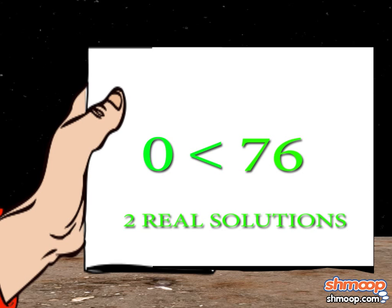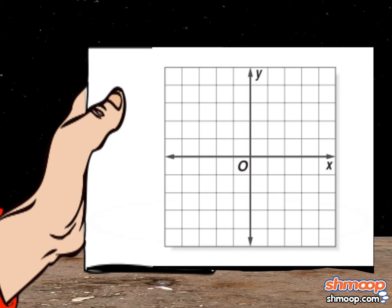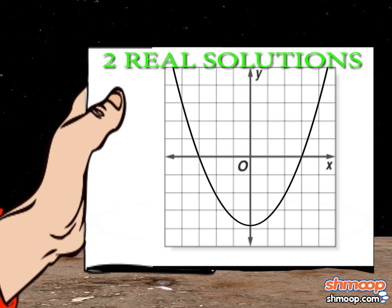So, there are two distinct, real solutions to this problem. By looking at the graph, we can see that there are two real solutions because the parabola touches the x-axis at two distinct x values.